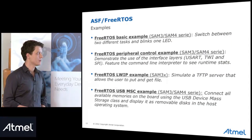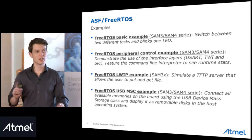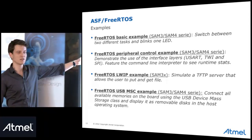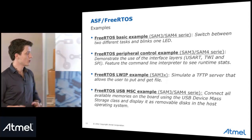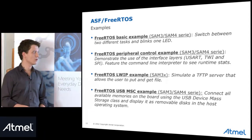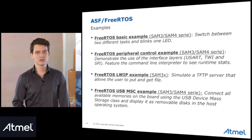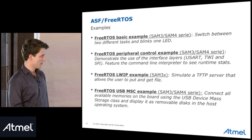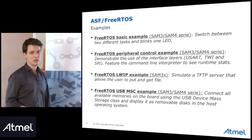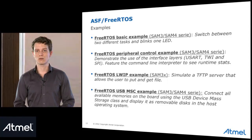In ASF you can find several examples. The FreeRTOS basic example simply switches between two different tasks and blinks an LED. The FreeRTOS peripheral control example demonstrates use of the interface layer for USART, TWI, and SPI. The FreeRTOS LWIP example simulates a TFTP server that allows the user to put and get files, mainly targeting the SAM4E device. The last one is the FreeRTOS USB MSC example. In addition, the hands-on will be ported into an application note that customers can use as a reference when starting with FreeRTOS.